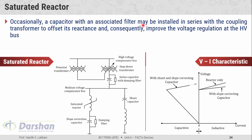Occasionally, a capacitor with an associated filter may be installed in series with the coupling transformer to offset its reactance and consequently improve voltage regulation at the HV bus. In ideal conditions, there is no effect from the coupling transformer, but in practice, the transformer is inductive. So to offset the inductive reactance of the coupling transformer, a capacitor is connected in series with it. Once again, L and C come together creating resonance risk, so a damping filter is connected across that capacitor.